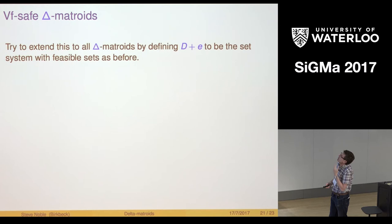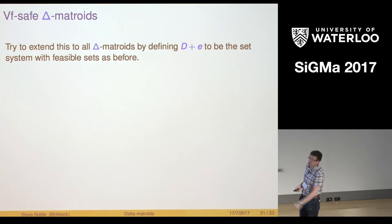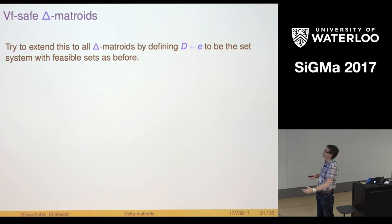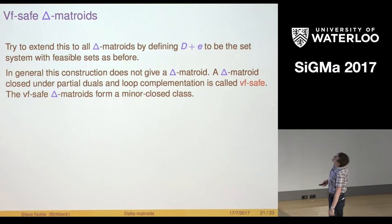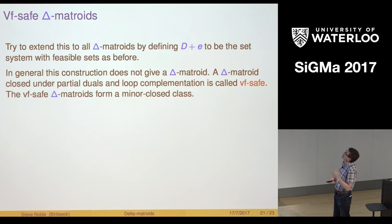That leads us to a class of delta matroids I'd like to understand a little more, which is VF safe delta matroids. What we try to do is to extend this operation to all delta matroids. We form a new set of feasible sets, just like in that rule which was on the previous slide. Problem is that in general this doesn't give you a delta matroid.